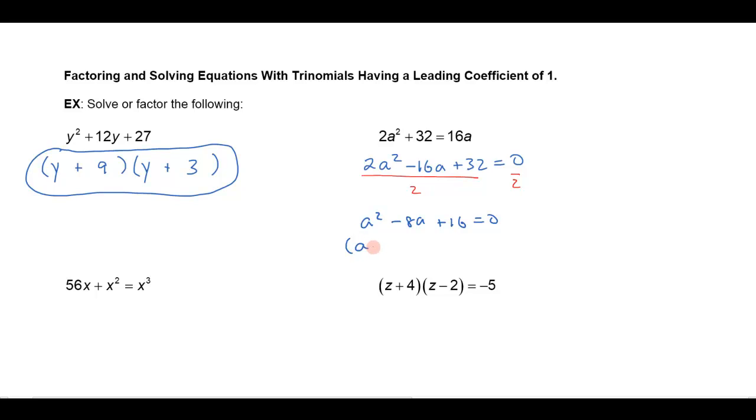Then I can factor that. That actually looks like a perfect square: a minus 4 times a minus 4 equals 0. So I factored that and then I have to go a step further since it's an equation. I want to set each of those factors equal to 0. So either a minus 4 is equal to 0, or the other factor is the same thing. So I'm going to get a is equal to 4 or a is equal to 4, and so the only answer is a equals 4.